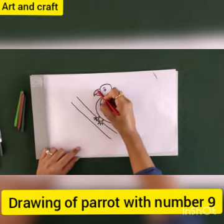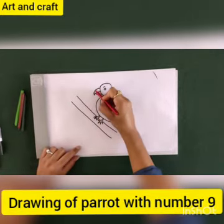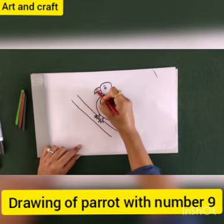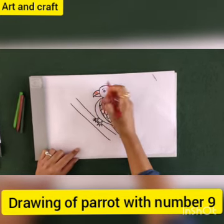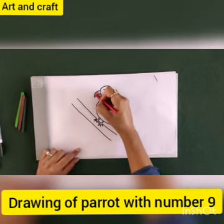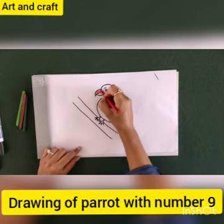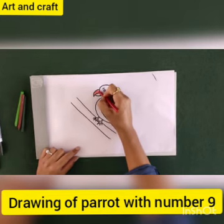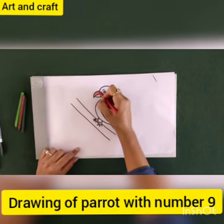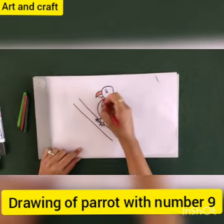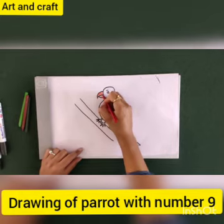We will color the parrot with red color and green color for the entire body. Below the branch, we use brown color.